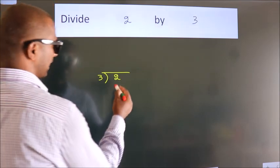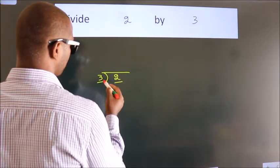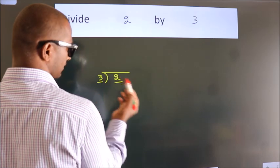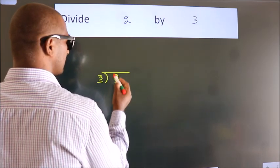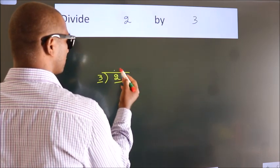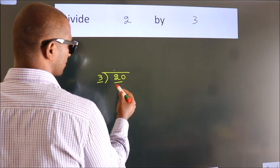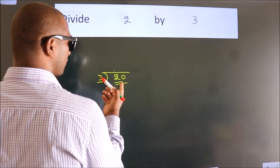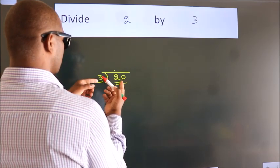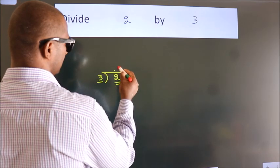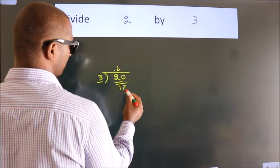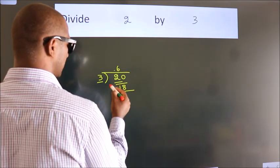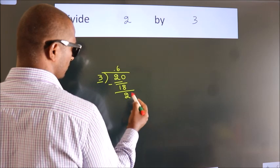Here we have 2, here 3. 2 is smaller than 3, so what we should do is put a dot and take 0, making it 20. A number close to 20 in the 3 times table is 3, 6, 18. Now we subtract and we get 2.